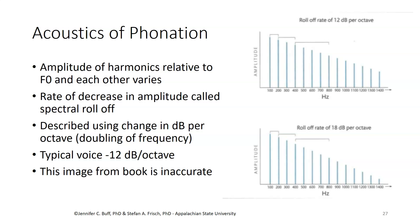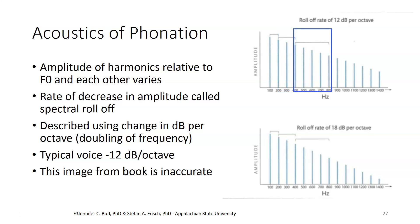The amplitude of the harmonics relative to the fundamental frequency and to the other harmonics varies. There is a regular decrease in amplitude referred to as the spectral roll-off, described using a change in dB amplitude for each octave, where an octave is a music term for a doubling of frequency. A typical voice has a roll-off of about 12 dB per octave, so higher octaves have a lower amplitude. These images show a drop-off in amplitude and indicate octaves: from the fundamental to the first harmonic is one octave, from the first harmonic to the third is another octave, from the third to the seventh would be another octave, and so forth, with amplitude dropping as you go from one to the next.